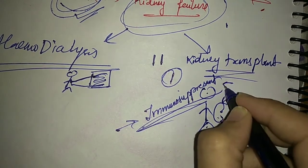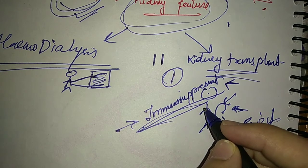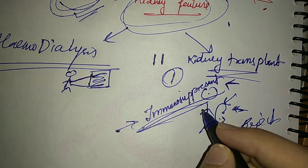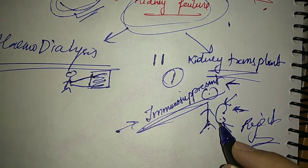So this person has to take immunosuppressants for a long time. For a very long period they have to take these medicines so that their kidney doesn't get rejected.